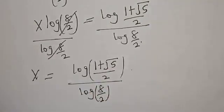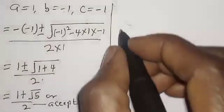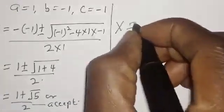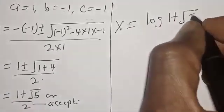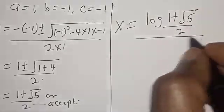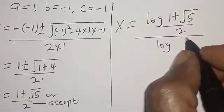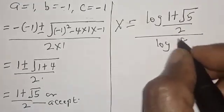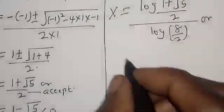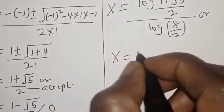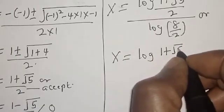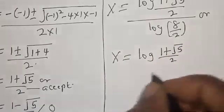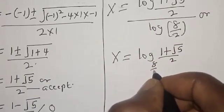Therefore our final answer is s is equal to log of 1 plus square root of 5 over 2, divided by log of 8 over 2.